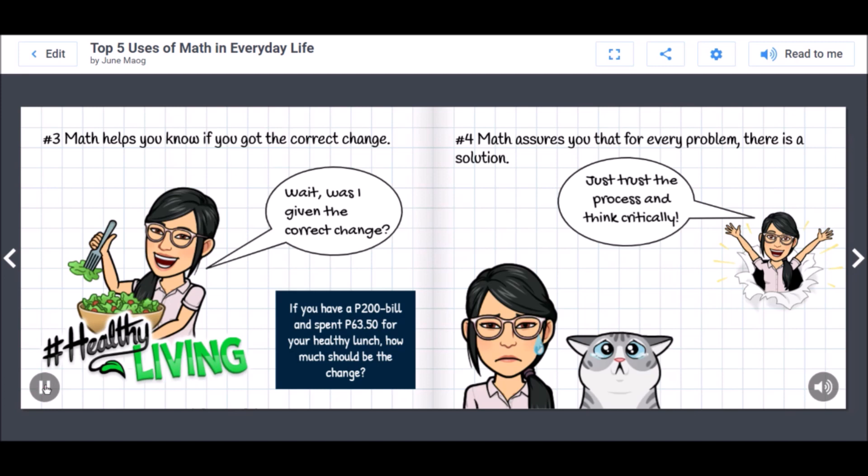Number three: Math helps you know if you got the correct change. Buying from the school cafeteria requires you to do quick calculations in your head to figure out your change. Knowing basic math will help you calculate that if you have a 200 peso bill and bought lunch for 63 pesos and 50 centavos, your change should be 136 pesos and 50 centavos.